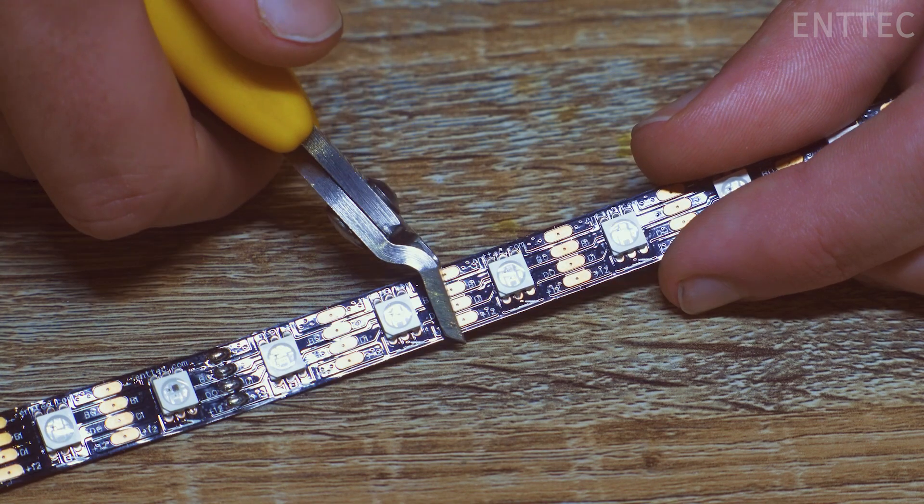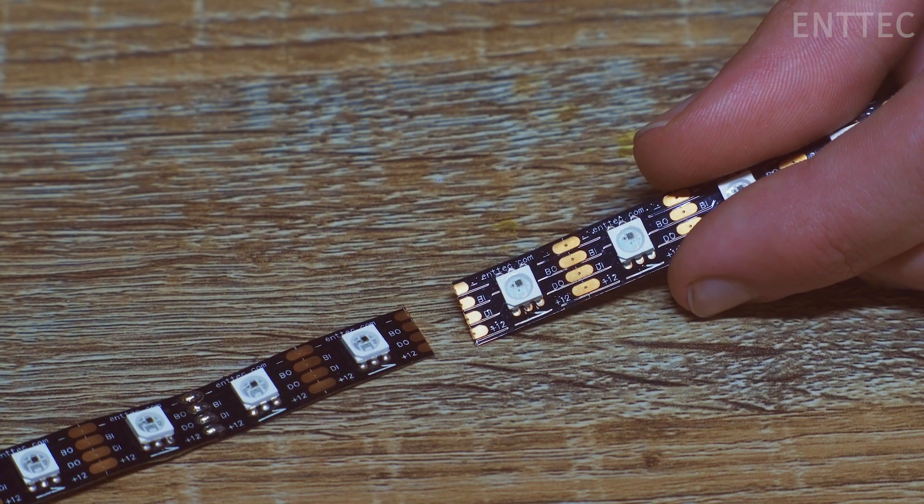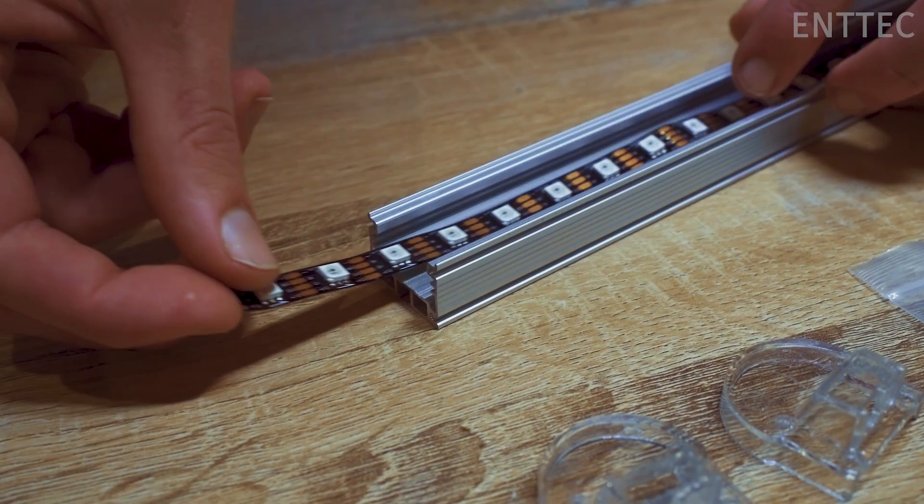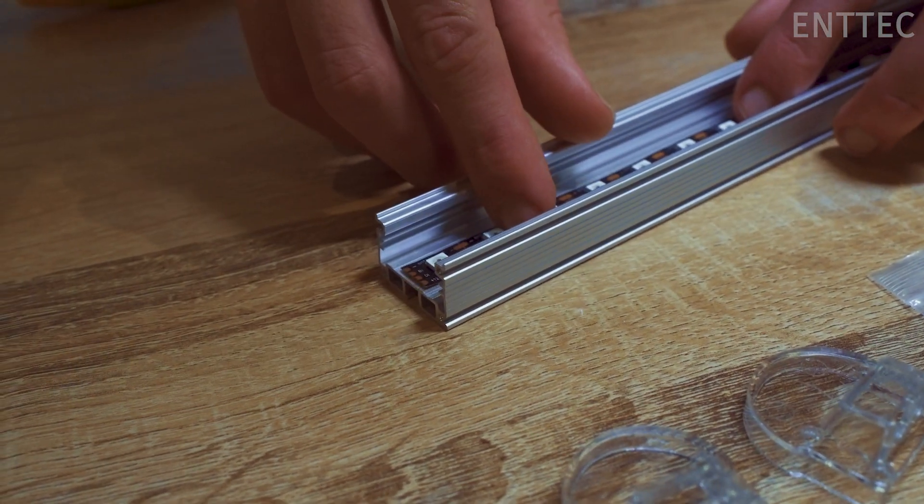First, cut your LED tape to length. Make sure you cut your tape a bit shorter than the extrusion length so that the entire tape fits within the extrusion.